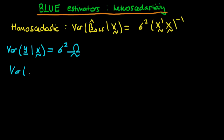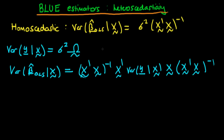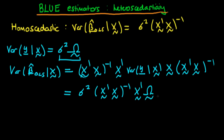Remember that we derived in the last video — before we substituted in σ² times the identity matrix I — that the variance of β̂_OLS given our matrix of independent variables X was equal to (X'X)⁻¹ X' times the variance of y given X, times X(X'X)⁻¹. Now if we substitute in our form of the variance, σ²Ω, this becomes σ²(X'X)⁻¹ X'ΩX(X'X)⁻¹, taking σ² out front as a scalar.